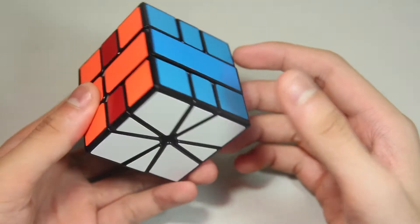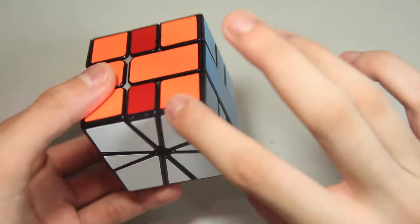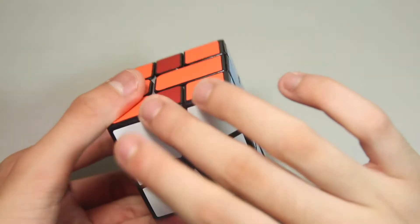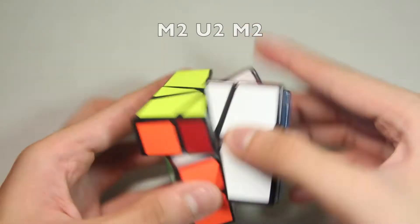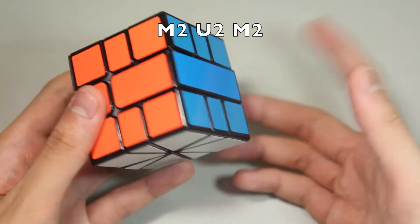Next, here's actually a very easy EP. It's just opposite-opposite, so these two have to switch and these have to switch. In this case, what you can do is M2, U2, M2, and it just solves it.